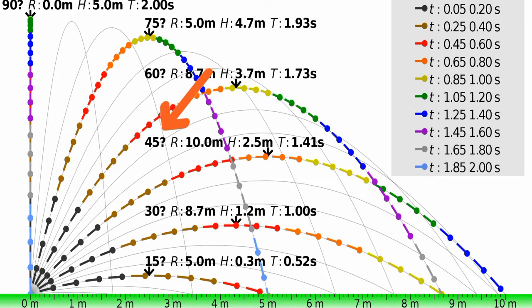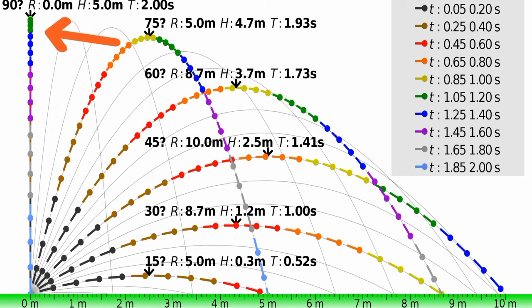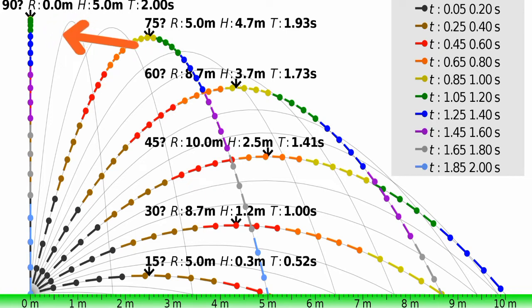At angles between 45 and 90 degrees, the projectile follows a higher and shorter trajectory compared to low-angle launches. The range decreases as the angle increases beyond 45 degrees, eventually reaching a minimum range at a launch angle of 90 degrees. For launch angles above 90 degrees, the projectile travels in an upward arc and falls back. High-angle launches are commonly seen in fireworks or mortar launches where the objective is to propel objects vertically into the air.